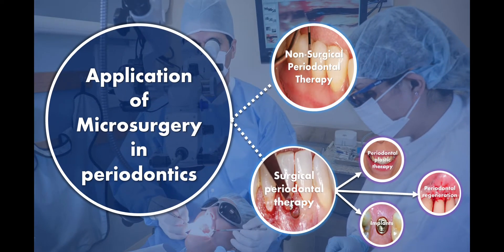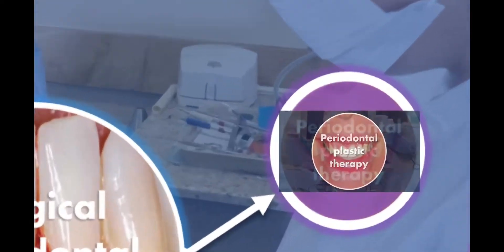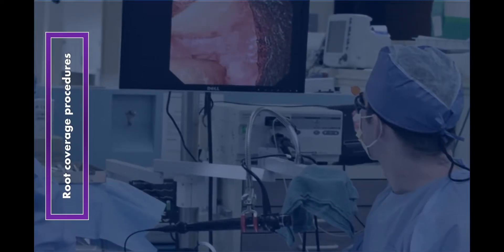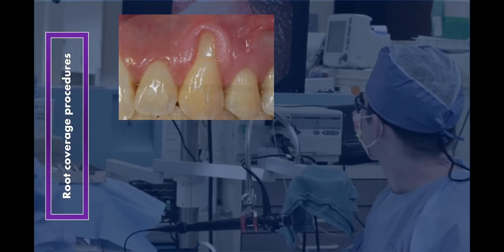In surgical periodontal therapy, the periodontal plastic surgery procedures include root coverage procedures, the aesthetic smile line, and entire papilla preservation. The success of a root coverage procedure involves an atraumatic surgical approach, the experience of the surgeon, and excellent visualization of the operating field — all of which can be fulfilled using the surgical microscope.